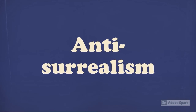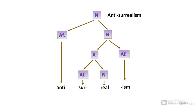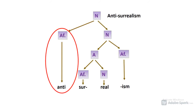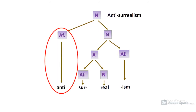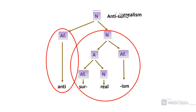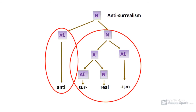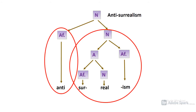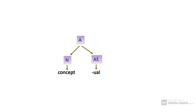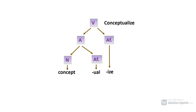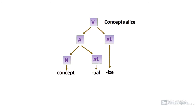Let's come back to our tree analogy and break down the word anti-surrealism. Typically, the final affix will determine the category of a word. In this case, it's anti, and since it's a prefix to the noun surrealism, it does not change the category. However, we can break down surrealism into its components. Now let's build a tree with the word concept — here it becomes conceptual, and finally it becomes conceptualized, turning the noun into an adjective and finally a verb.